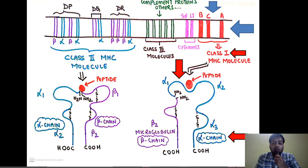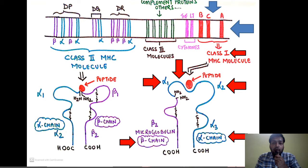The other chain is the beta chain, which is non-polymorphic because it is composed of just one unit — the beta 2 microglobulin, which is the light chain. The alpha 1 and alpha 2 domains form the antigen binding cleft — the peptide binds between alpha 1 and alpha 2. This is another very important MCQ: in class 1 MHC, the alpha 1 and alpha 2 domains form the antigen binding cleft, which is the site for binding of peptide antigens.